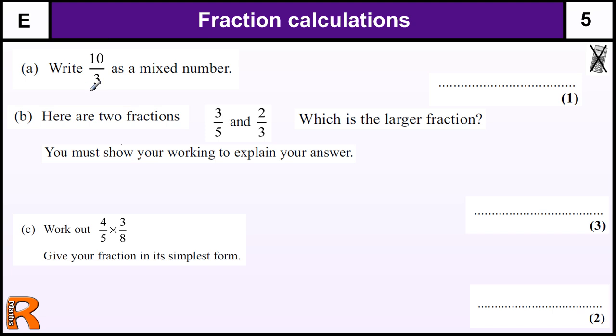Changing this top-heavy fraction into a mixed number - we've got 10/3. If I have one whole shape and split it up into thirds, that's one, two, three-thirds. Another whole shape split into thirds is another three-thirds. So that's six-thirds in total. Then another one would be nine-thirds, and you're left with one-third left over.